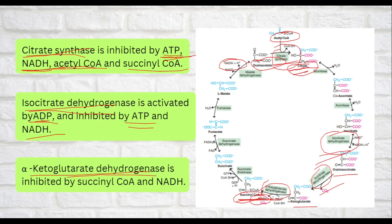Alpha-ketoglutarate dehydrogenase is inhibited by succinyl-CoA and NADH. If succinyl-CoA is already present, we can avoid energy waste, so it inhibits alpha-ketoglutarate dehydrogenase. Same goes with NADH — if NADH is abundant, it also inhibits alpha-ketoglutarate dehydrogenase.